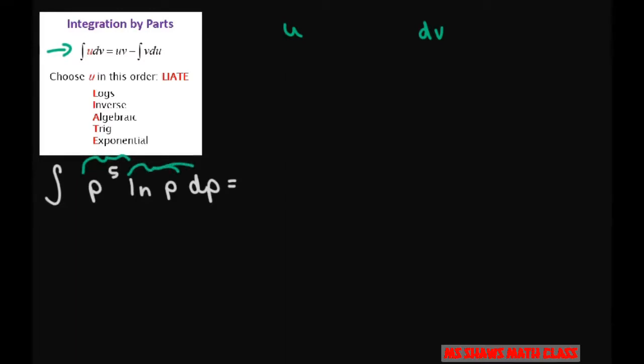Which part? And then so then we could do the derivative of u with respect to whether we have p, and then find v. So we're using this mnemonic device, and since we have a log, a natural log, we're going to choose that to be u. So u is going to be ln of p. That means our dv is everything else.